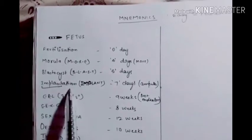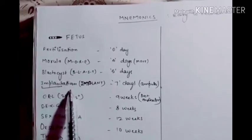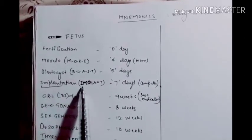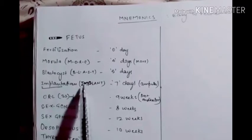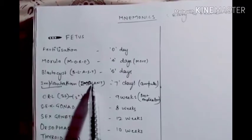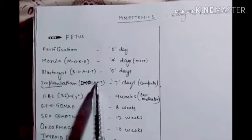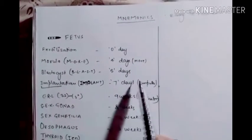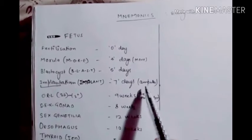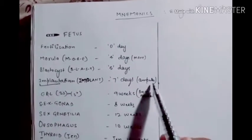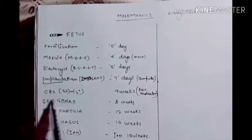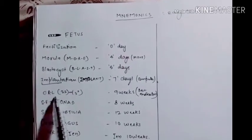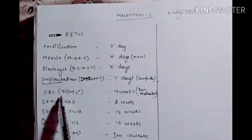For implantation, count the letters in 'implant' — one, two, three, four, five, six, seven — that's seven letters, so implantation occurs at seven days.